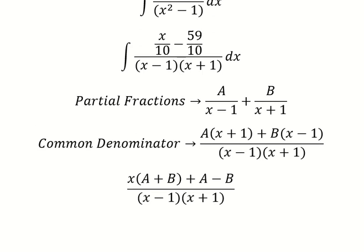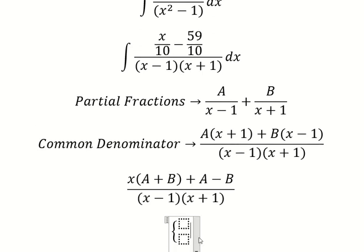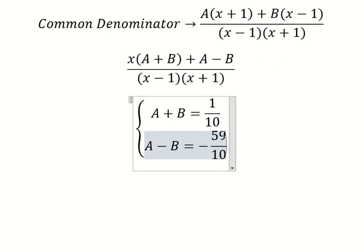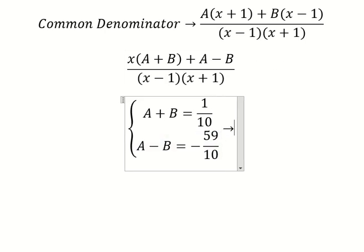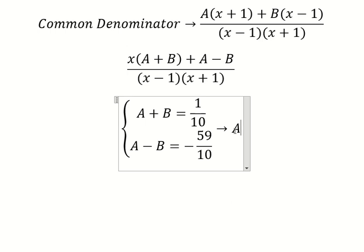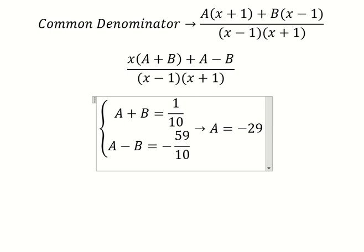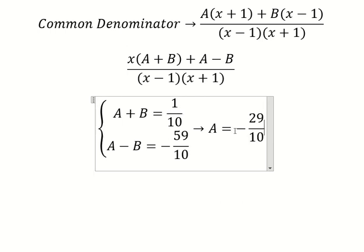So we just create the system of equations. And now we need to find the solutions of A and B. So A equals negative 29 over number 10, and B is number 3.